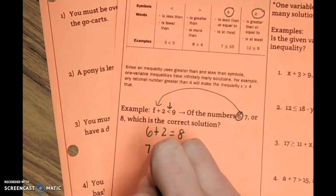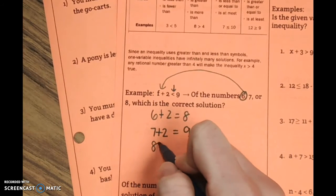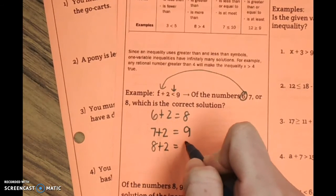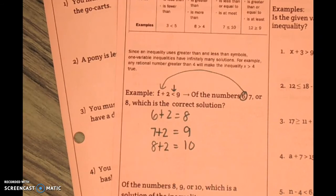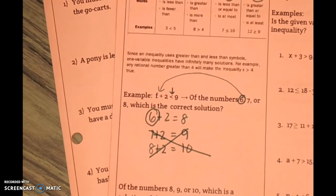If we would have used 7 plus 2, it's not. 9 is not less than 9. If we would have run 8 plus 2, that equals 10. 10 is not less than 9 either. So, 6 is the correct one. Those ones don't work.